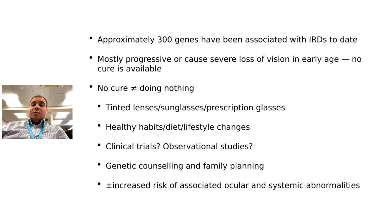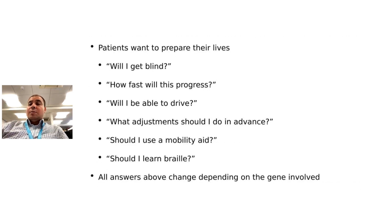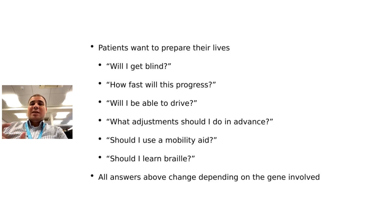Clinical trials and observational studies are also important to consider. Patients want to plan their families, seek genetic counseling, and understand the chances their child will be affected. Some genes causing retinitis pigmentosa may also cause systemic features like kidney abnormalities, heart abnormalities, and hearing loss. Patients also want to prepare their lives — will they go blind, when, how fast will it progress, will they be able to drive, should they use a mobility aid, learn braille, or get a guide dog? All these answers will change depending on the gene involved.